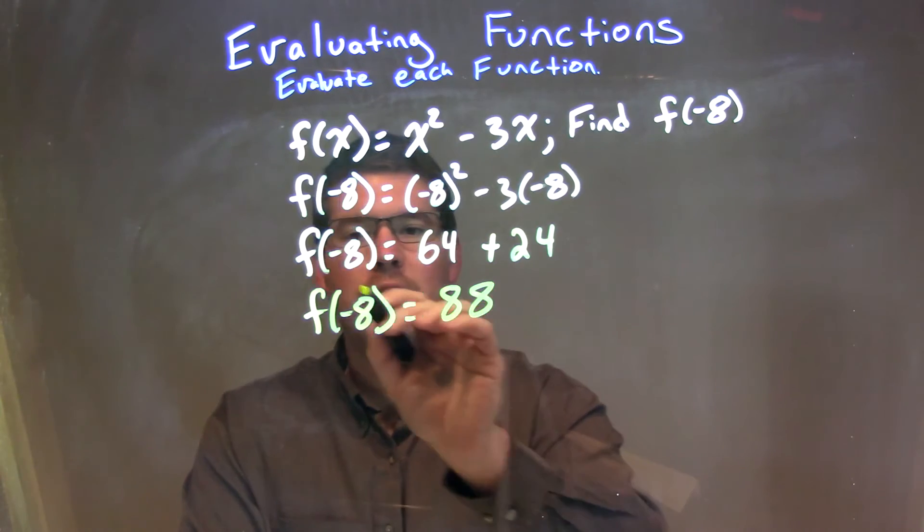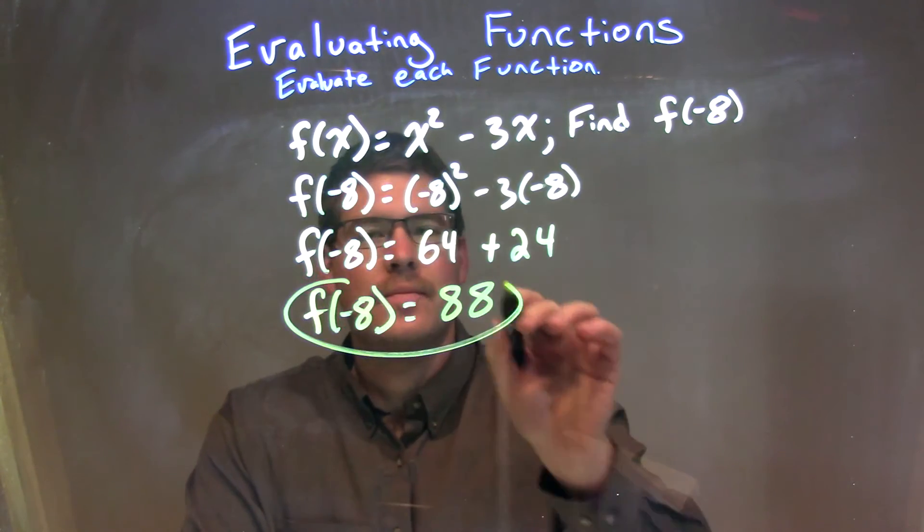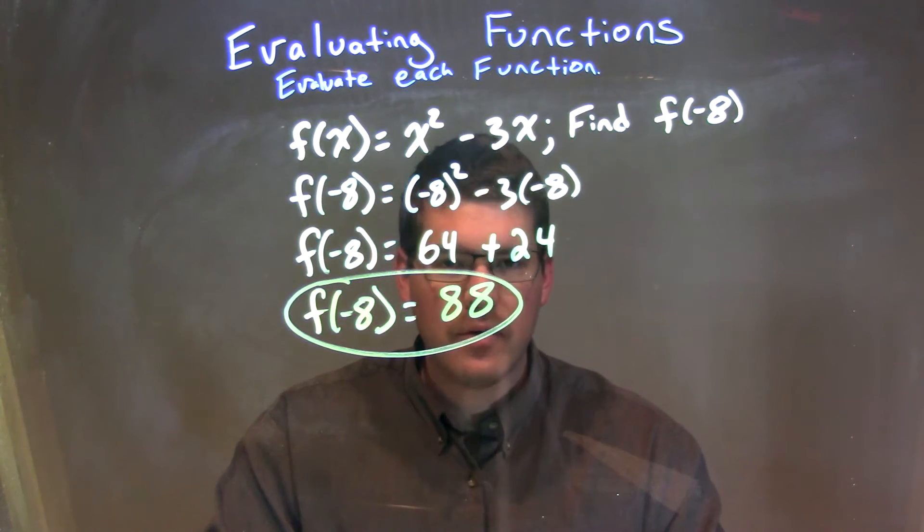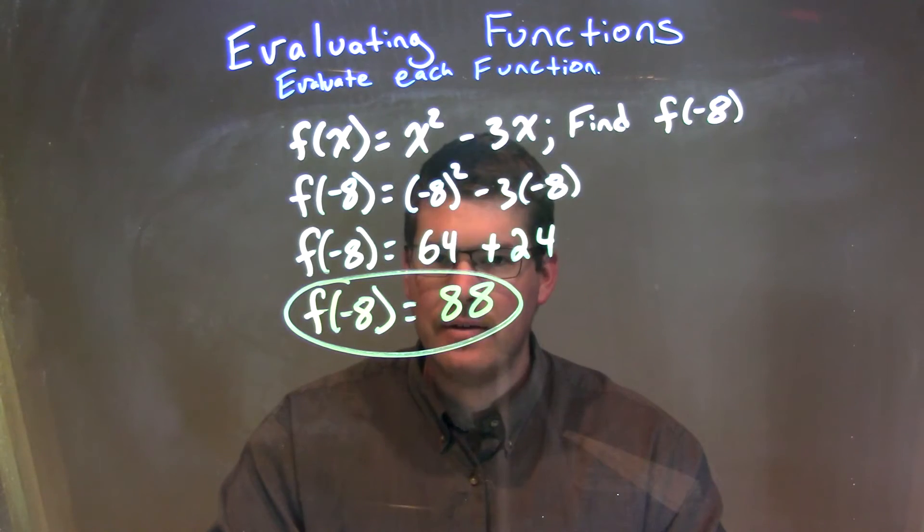So our final answer is f of negative 8 is equal to a positive 88.